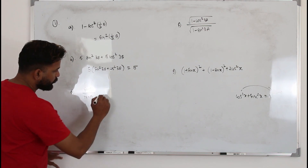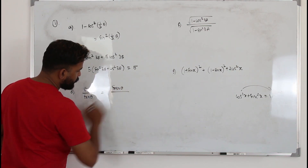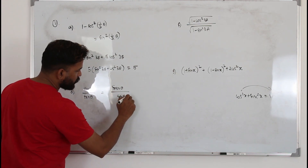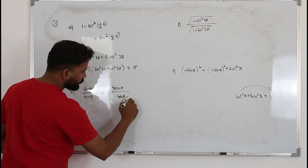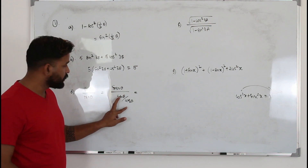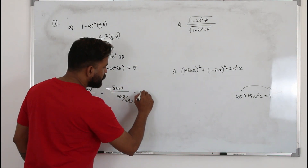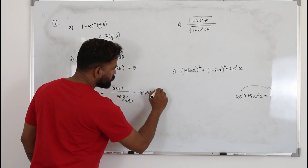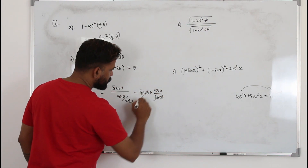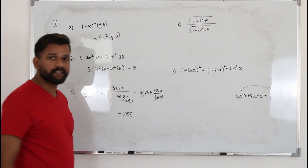For part d: sin θ divided by tan θ. Replace tan θ with sin over cos. When you have a fraction in the denominator, multiply by its reciprocal. So you have sin θ times cos over sin. The sin cancels, and you get cos θ. That is the answer.